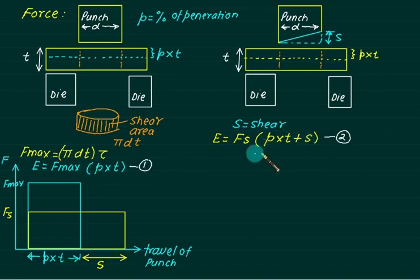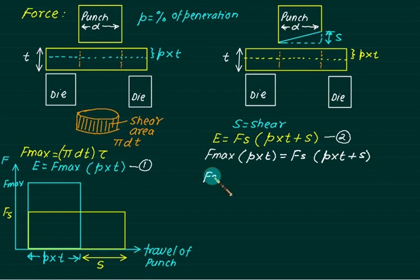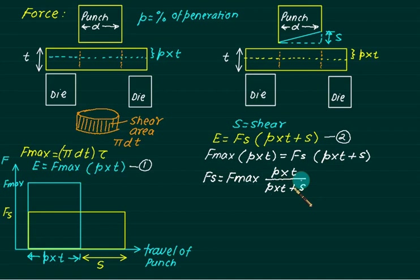The force required with shear, Fs, is found using the energy concept: F_max × p × t = Fs × (p·t + S). From this, we can calculate Fs. Since Fs is a fraction of F_max, the shear force is less than the maximum force, so less force is needed when shear is provided.